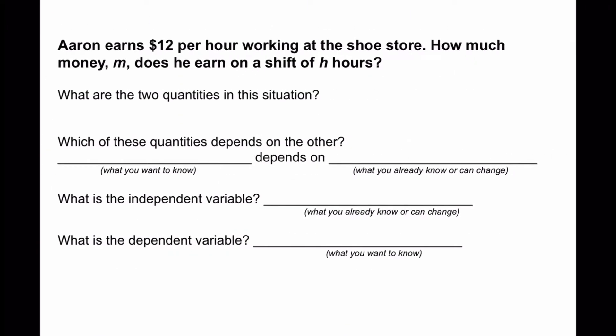Aaron earns $12 per hour working at a shoe store. How much money M does he earn on a shift of H hours?